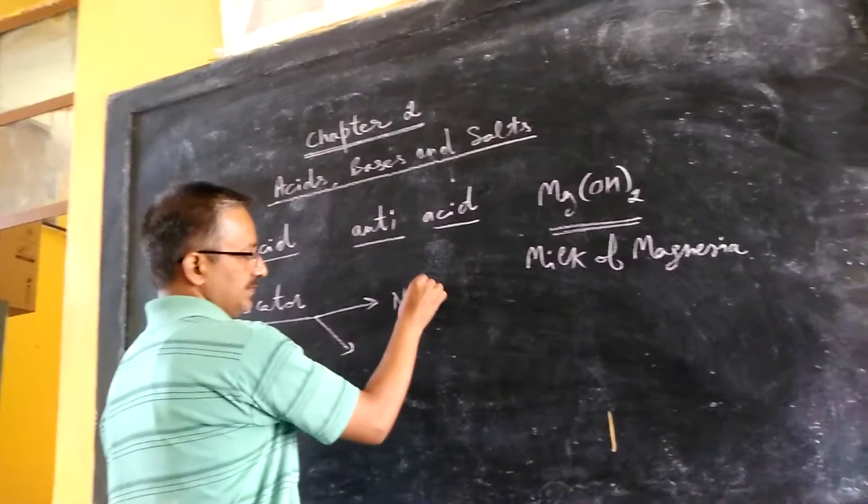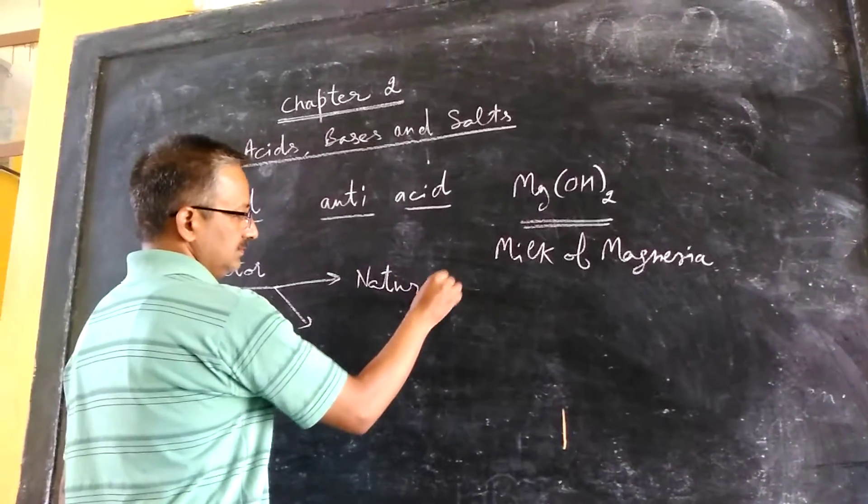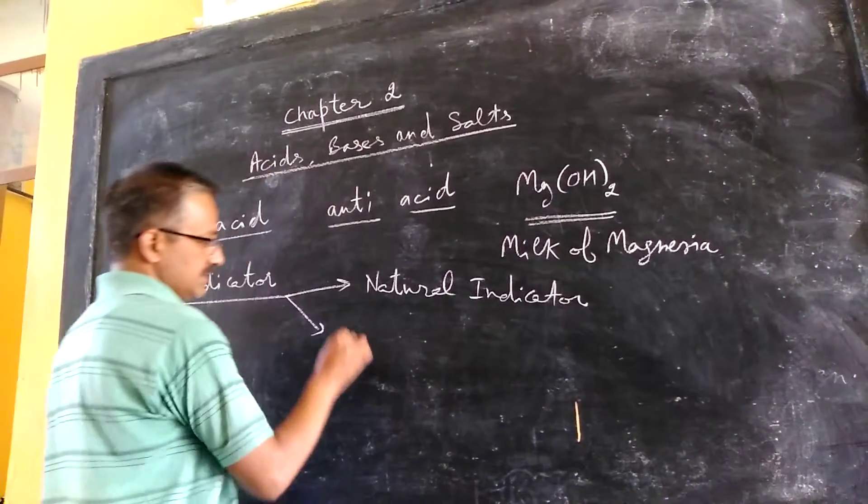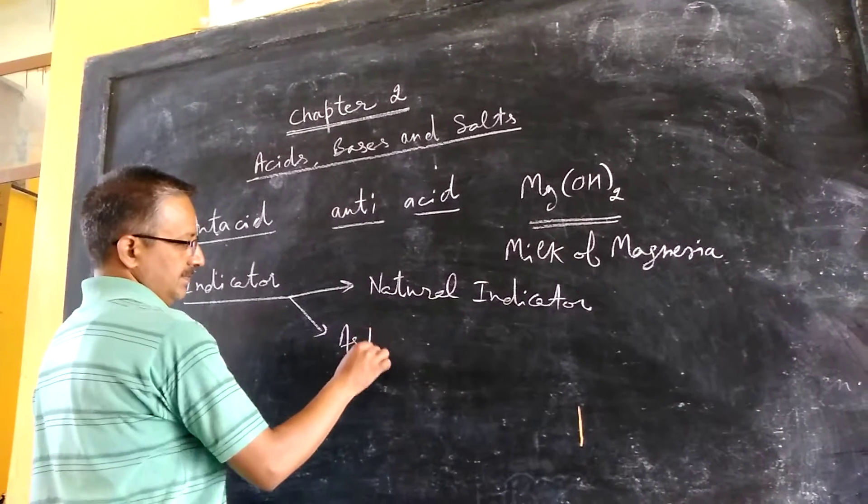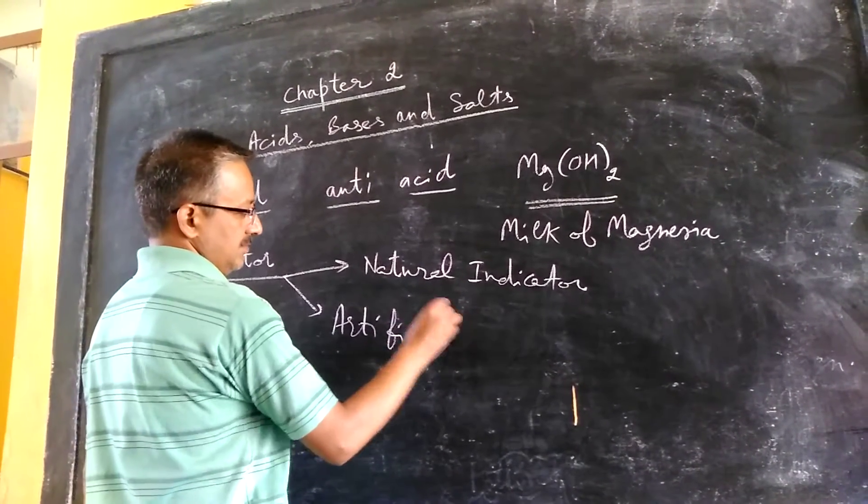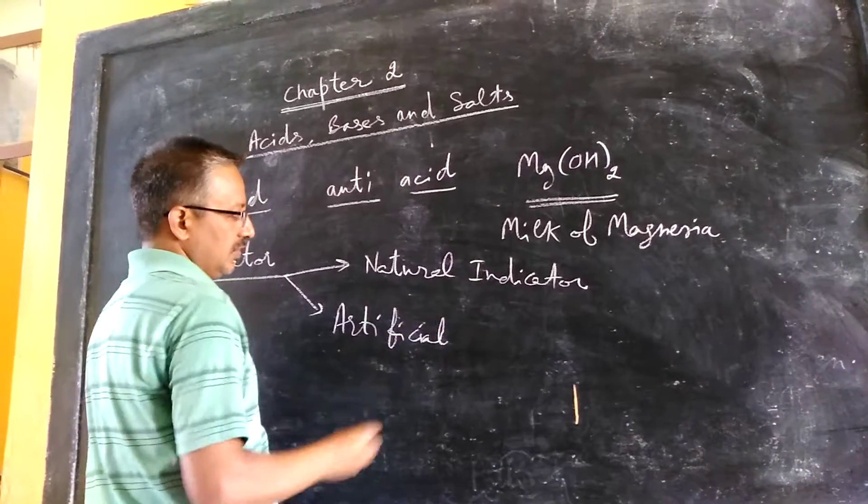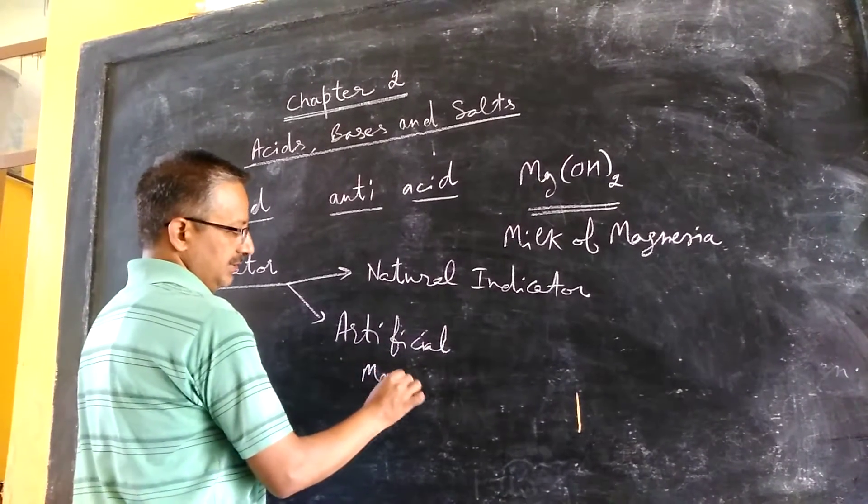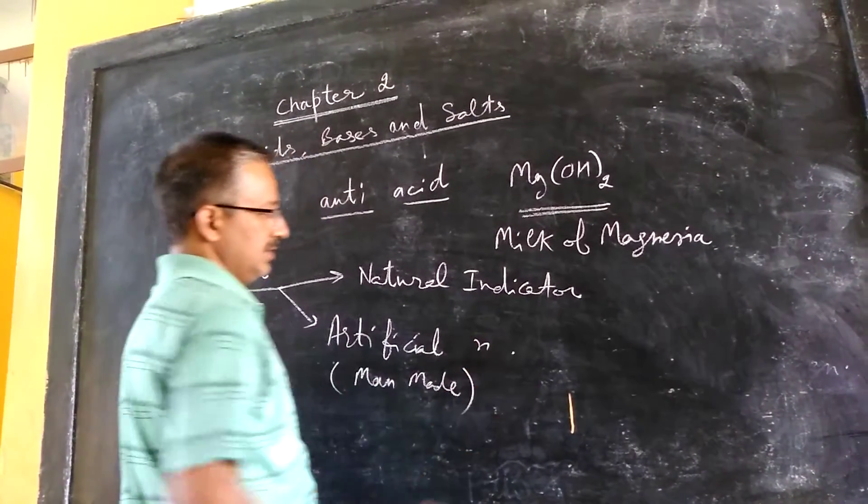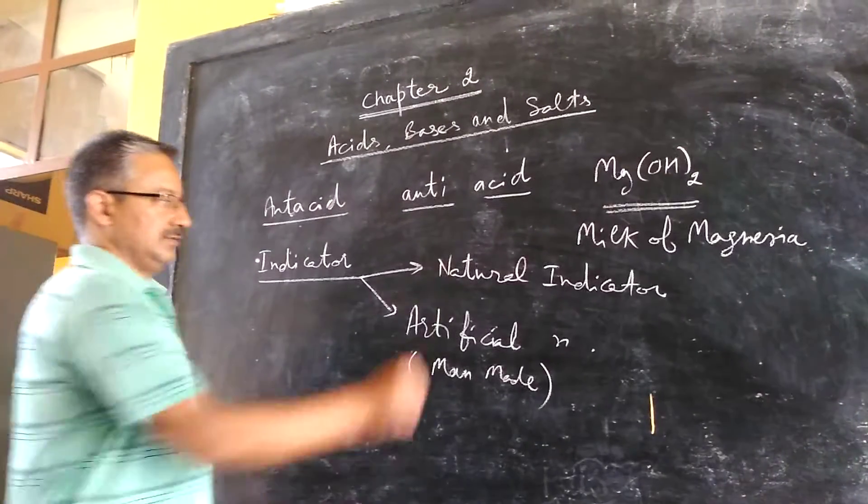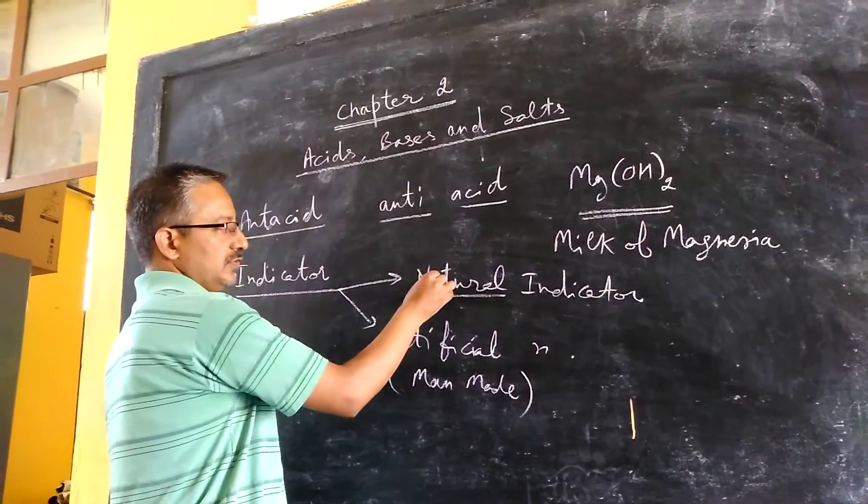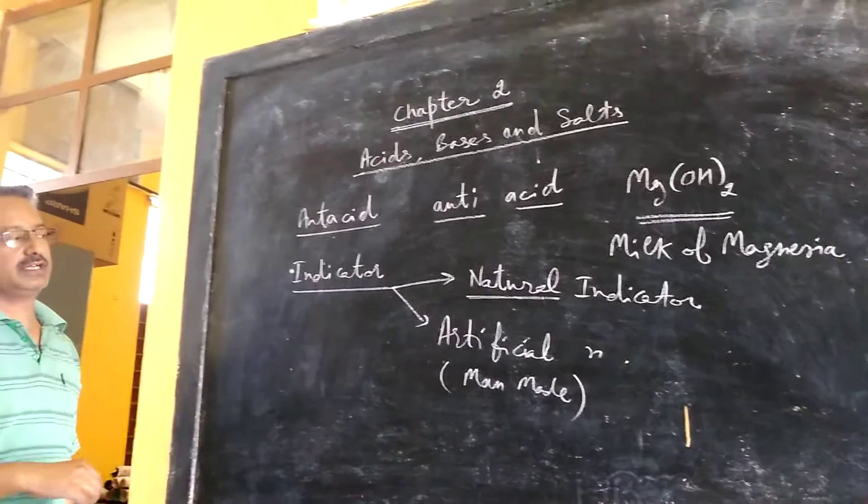Now indicators are of two types: natural indicators and artificial indicators, or we can say man-made indicators. Now as the name suggests, any indicator which is found in nature, that is called natural indicator.